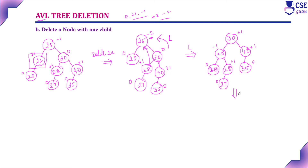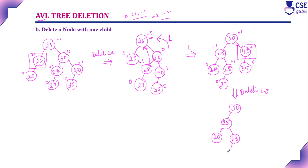Next, we delete node 40, which also has one child (35). After deletion, node 35 occupies the position of 40. The left subtree remains unchanged. Checking the balance factors after deletion: leaf nodes are 0, some nodes show +1 and -1. The root node now has a balance factor of 3 minus 1 = +2. The root is unbalanced, so we must apply an appropriate rotation.